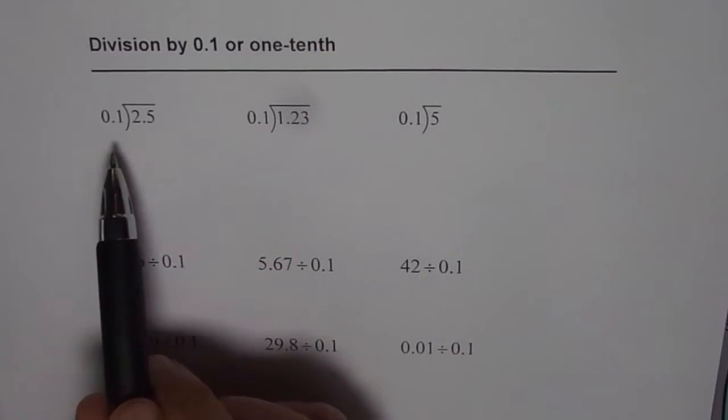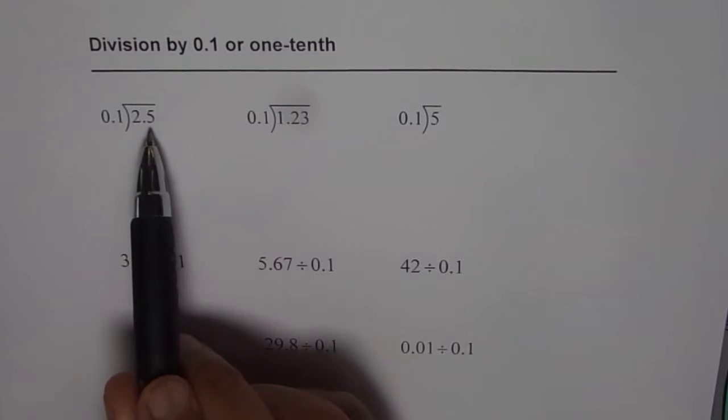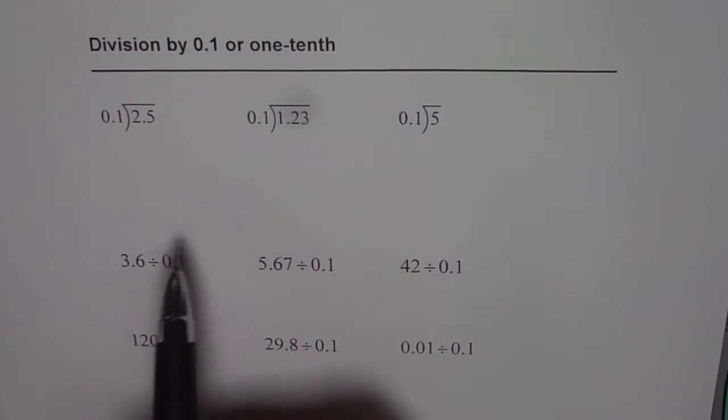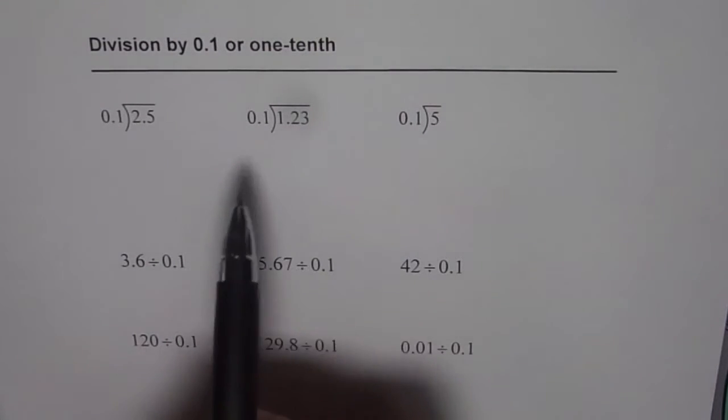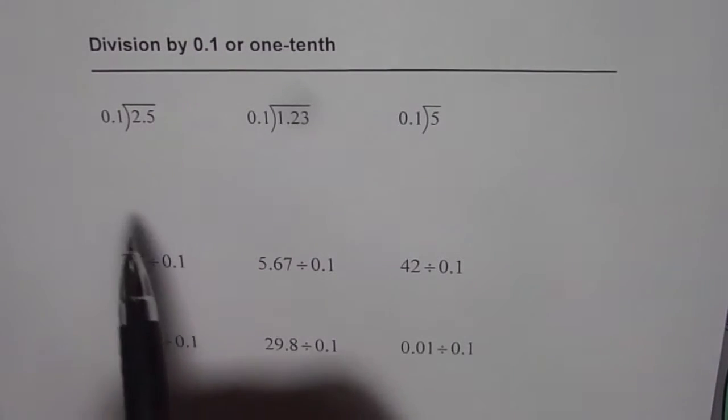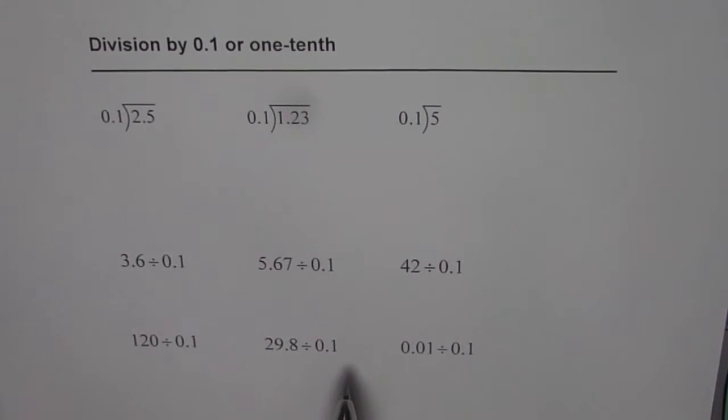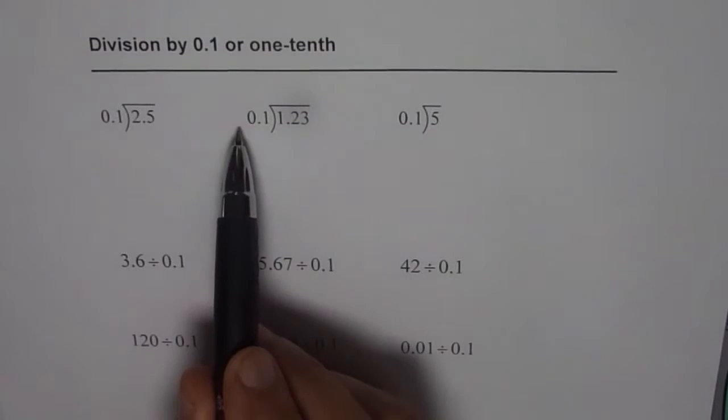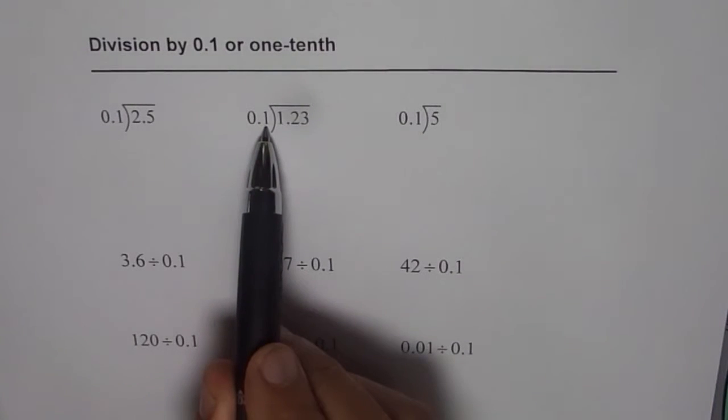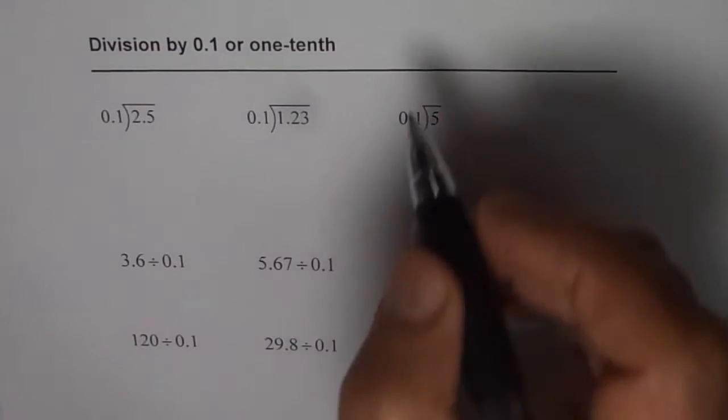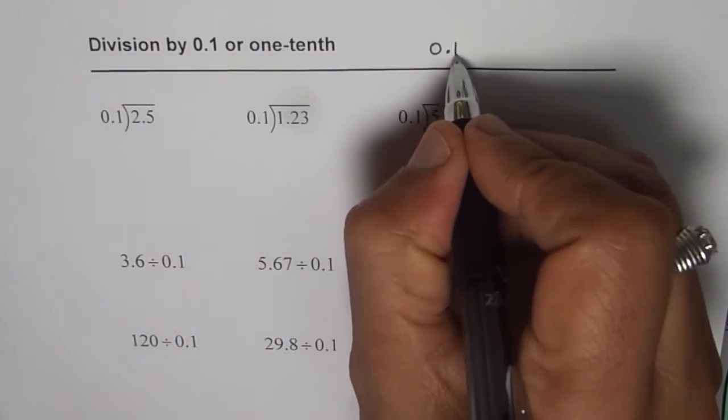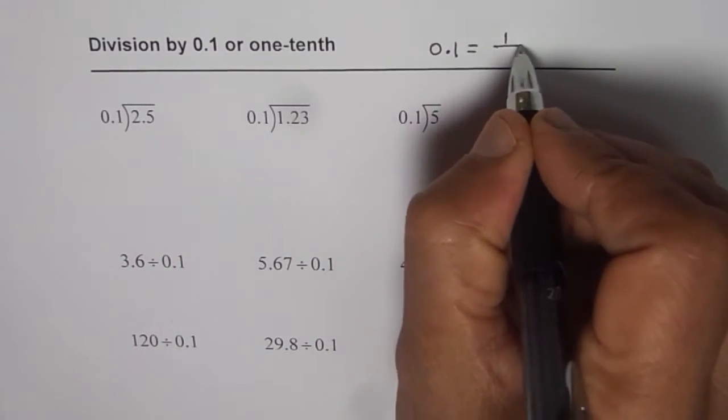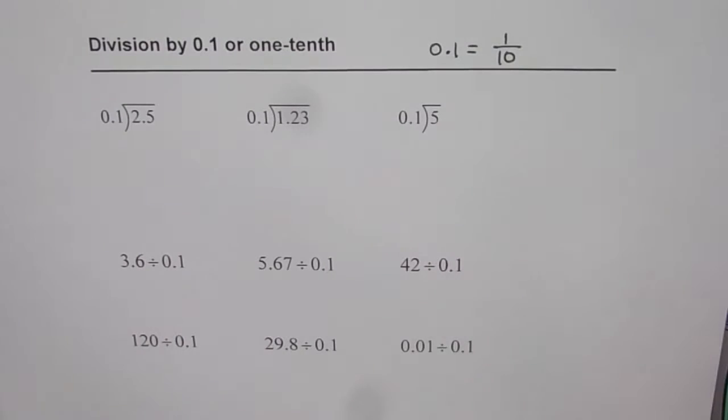First one is 2.5 divided by 0.1, and then we have 1.23 divided by 0.1. So we are dividing all these numbers by one-tenth, 0.1. Now 1 is in the tenth place, right? You know 0.1 is same as 1 out of 10, so one-tenth.